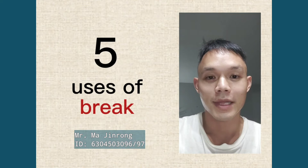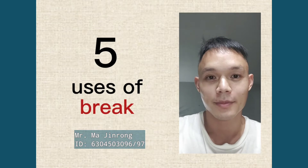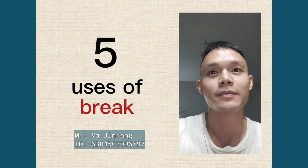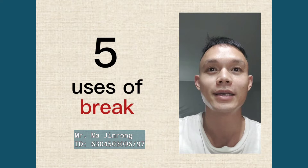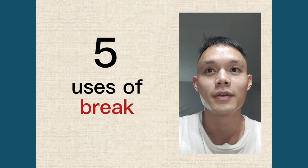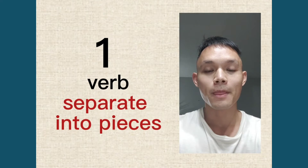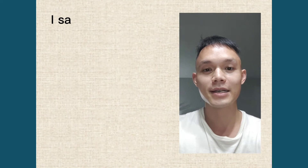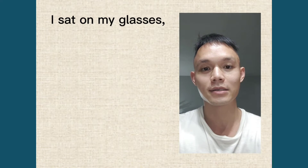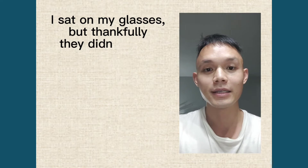Hello everyone, nice to see you. My name is Ma Jin Yong. Today I want to show you five ways to use the word 'breaking' in English. Number one, verb: it means to separate into pieces. I sat on my glasses — but luckily, they didn't break.